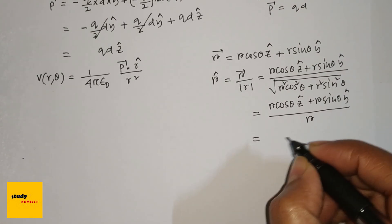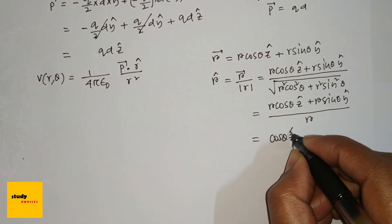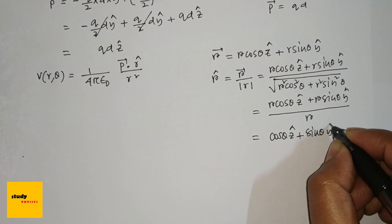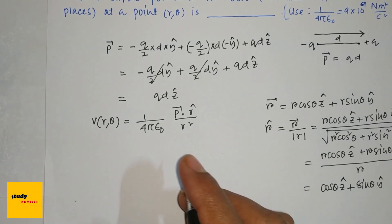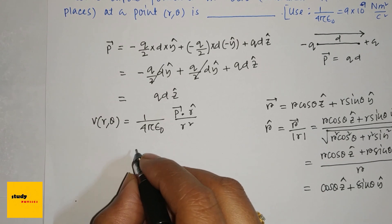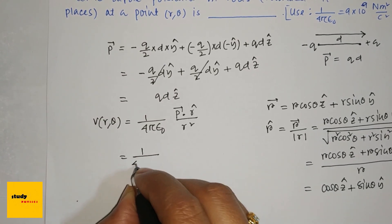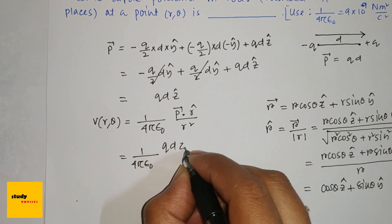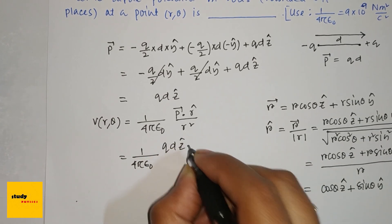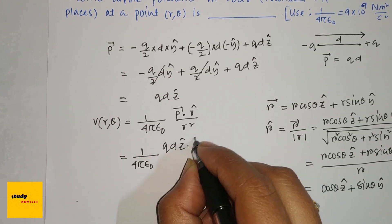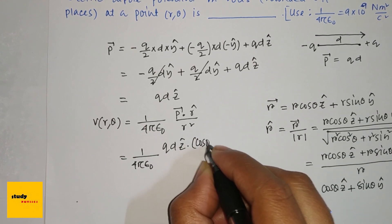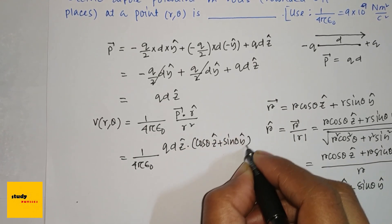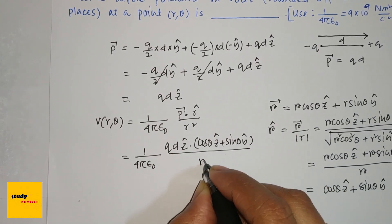So r-cap equals cos theta z-cap plus sin theta y-cap. Now computing V: 1 divided by 4 pi epsilon-naught, times p which is q d z-cap, dotted with cos theta z-cap plus sin theta y-cap, divided by r squared.